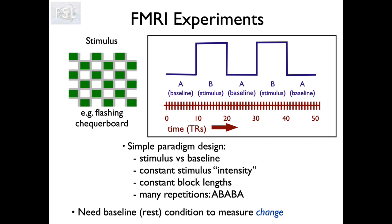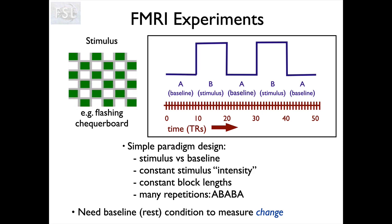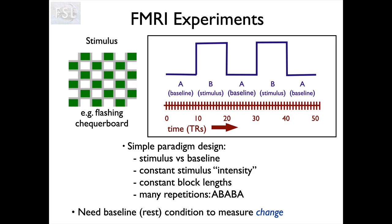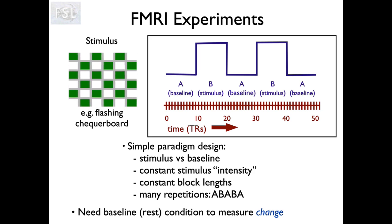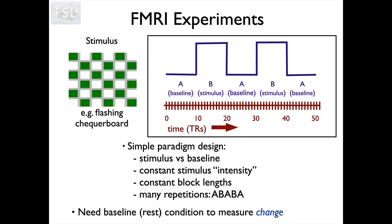One of them is often a baseline condition. That doesn't necessarily mean resting and doing nothing — it can be a complicated baseline where you're actually performing some sort of task, but the other task would be more complicated and it's the difference between those two tasks which would be interesting. And it can be more than two different conditions; we can have lots of different conditions. We must have at least two so that we can compare different things.